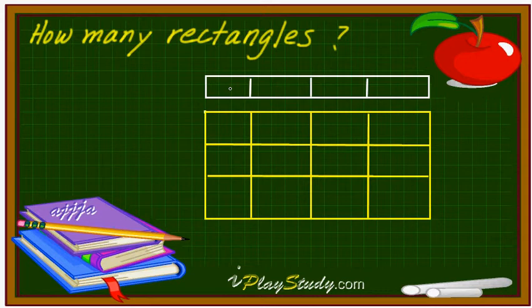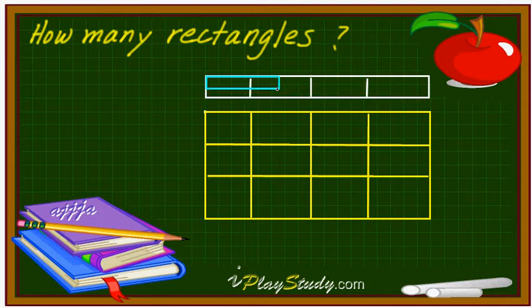So now, let's look at just the first row on the top. Then we're going to count how many. So from this point right here, we can make rectangles — that's one, two, three, and four. That's right. Let's write four right here.